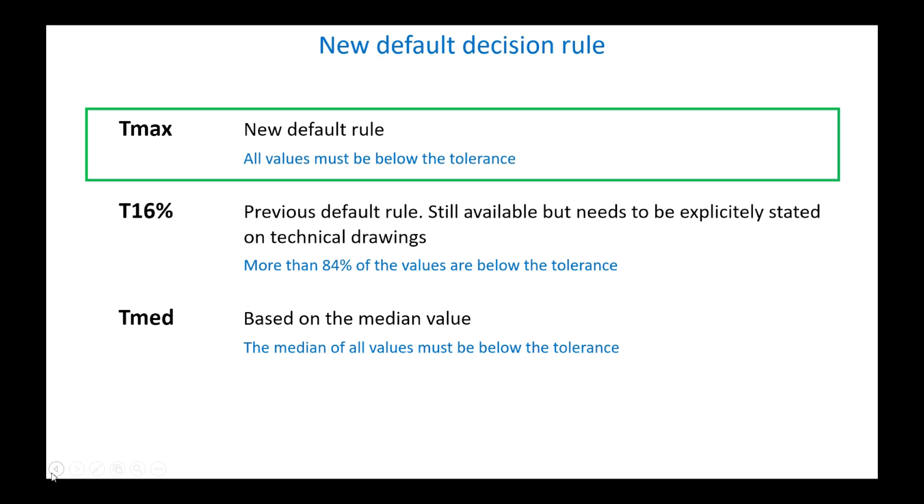So by default, unless otherwise indicated, the interpretation of parameter results must be done with the max rule. To continue using the 16% rule, you must now explicitly write it on the drawing.